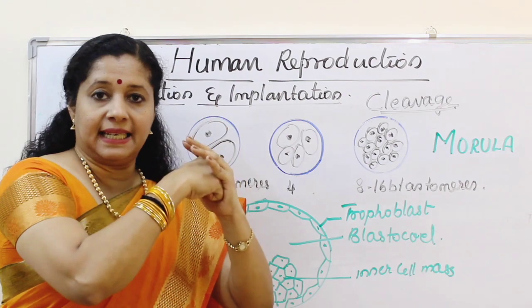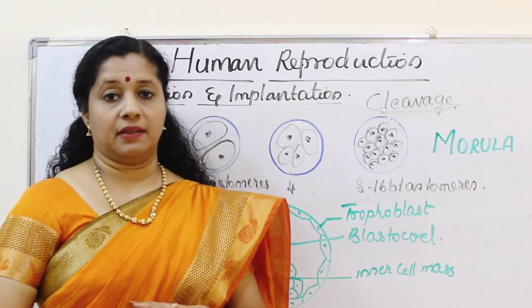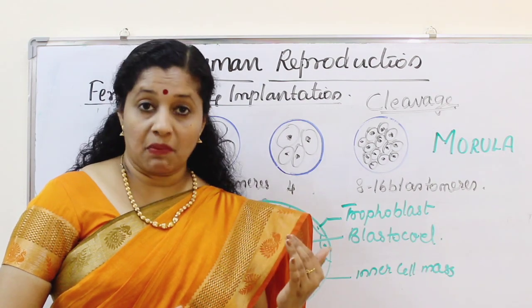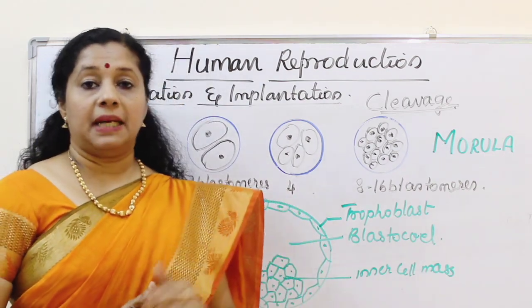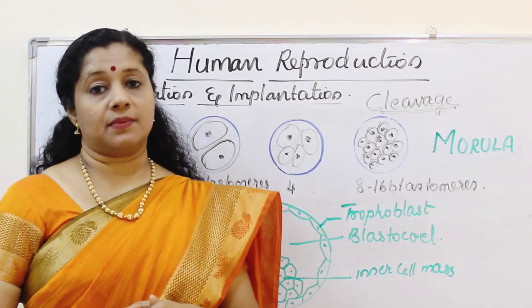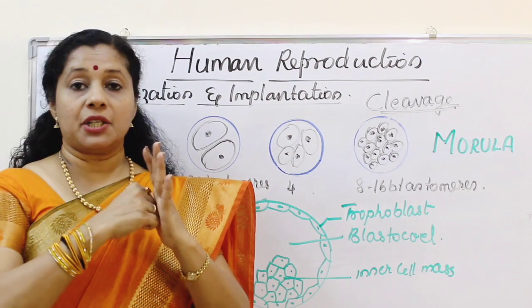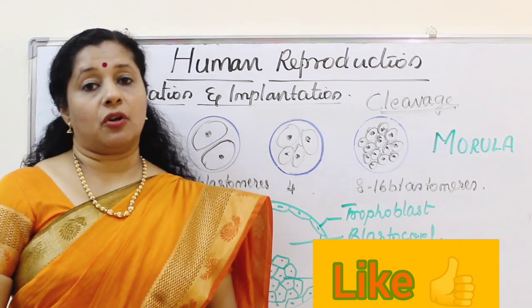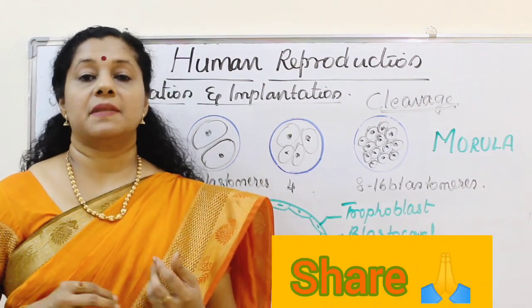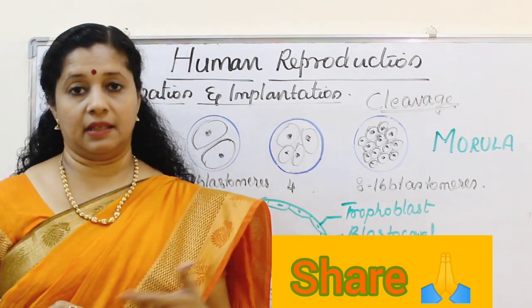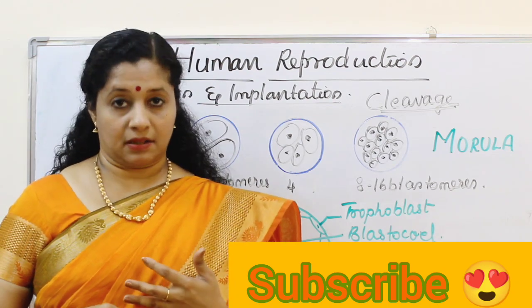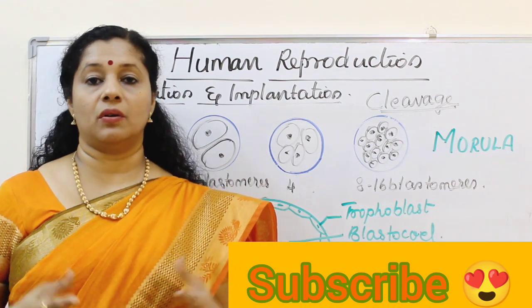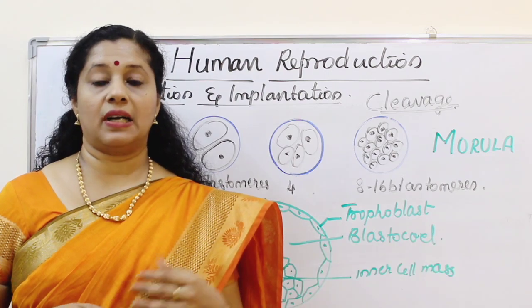Once inside, it enters the next stage called gastrulation, where the inner cell mass differentiates into three embryonic layers — since it is a triploblastic organism: the outer ectoderm, middle mesoderm, and inner endoderm, from which other organs start developing. From ectoderm: central nervous system, retina, neurons, and many other parts develop. From mesoderm: the heart, skin, connective tissues, and muscles develop. From endoderm: the digestive system, respiratory system, and related structures develop. This process of forming the gastrula is called gastrulation.